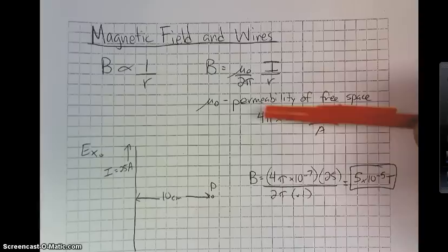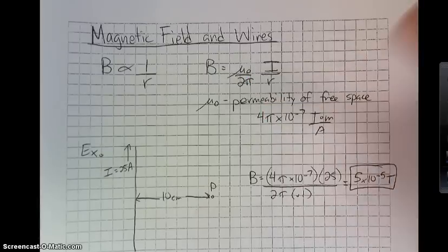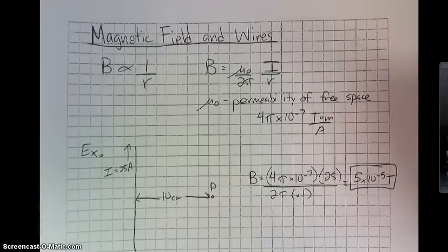You'll also notice that the 4π and the 2π, the pi's, will actually cancel each other. So the calculation is fairly simple, but what exactly are we using it for?